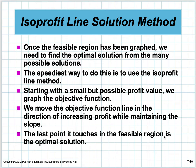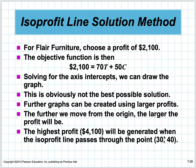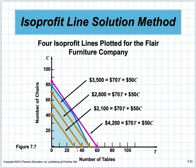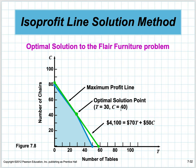One method of solving is the isoprofit line method. The profit line is 70T + 50C, and every profit level produces a set of parallel lines. At 2,100 dollars, anything along that line in the feasible region gives that profit. By increasing profit, these parallel lines shift until the last one that still touches the feasible region gives the maximum — at about $4,200, it just touches one point.